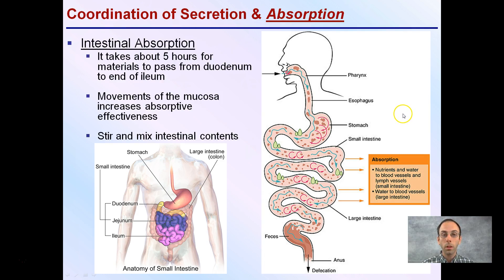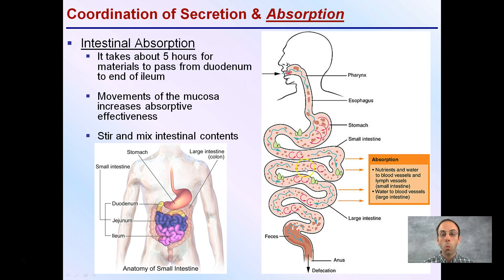Looking at absorption in general, it takes about five hours for materials to pass from the duodenum to the end of the ileum. Movements of the mucosa increase absorptive effectiveness, and we're absorbing nutrients and water to blood vessels and lymph vessels, mainly in the small intestine. There is also stirring and mixing of the contents, and water absorption to blood vessels occurs mainly in the large intestine, to maintain hydration.